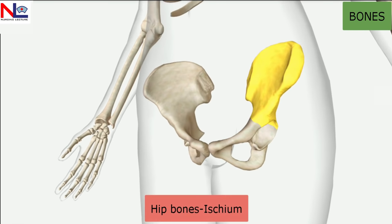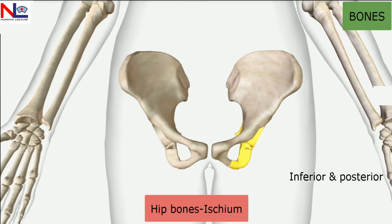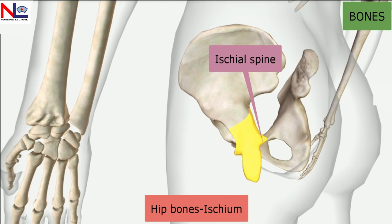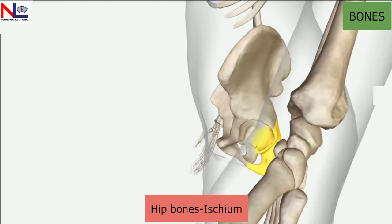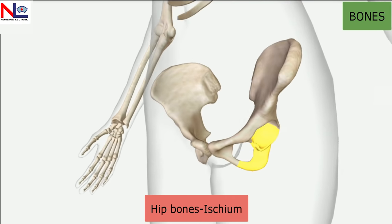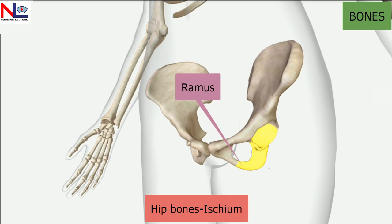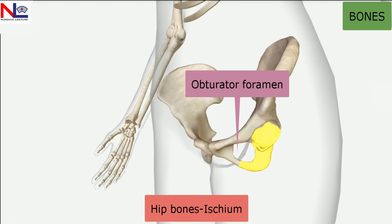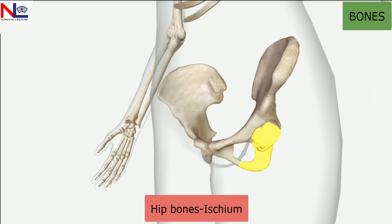The ischium forms the inferior and posterior region. Its prominent posterior feature is the ischial spine, which gives attachment for various muscle tendons. The rough area termed the ischial tuberosity helps a person to sit. Anterior to the body is the ramus, which fuses with the pubic bone. The ramus of the ischium and the body of the pubic bone form the largest foramen in our body — the obturator foramen — covered with the obturator membrane, through which blood vessels and nerves pass.